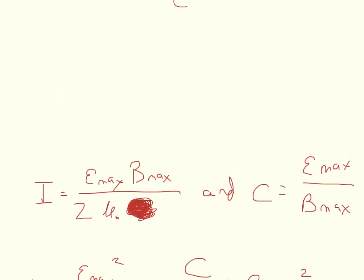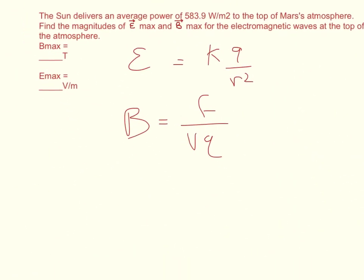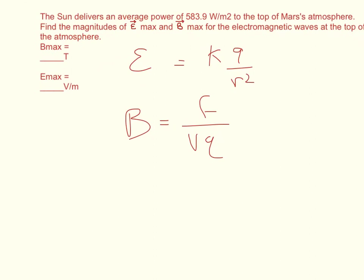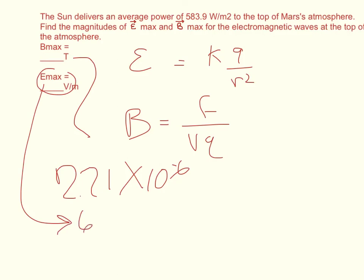So let me go ahead and give you the answer that I got. So you can check your work with what I have. So the maximum magnetic field was, Bmax was equal to 2.21 times 10 to the negative 6th. And Emax was equal to 663. And this is in units of Tesla. And this is in volts per meter or newtons per coulomb is another way of defining it.